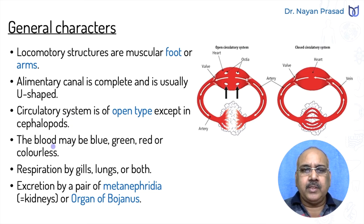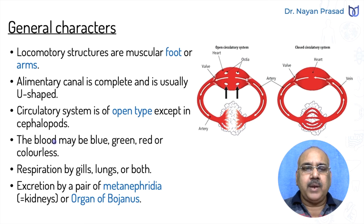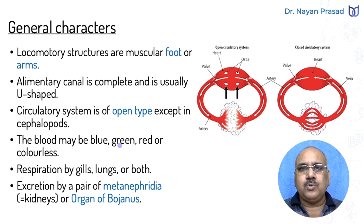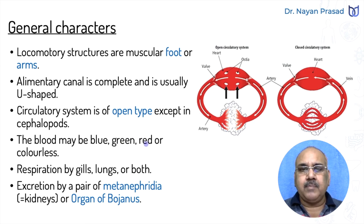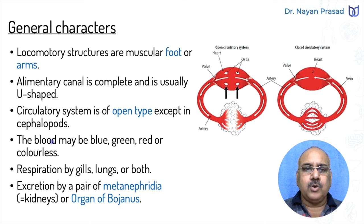In them, the blood may be blue, green, red, or colorless — so blood is of different types. The blue or green color of blood is due to the pigment hemocyanin, a copper-based pigment. Hemoglobin provides red color and is an iron-based pigment. In some members, blood may be colorless. So different types of respiratory pigments are found in their blood.